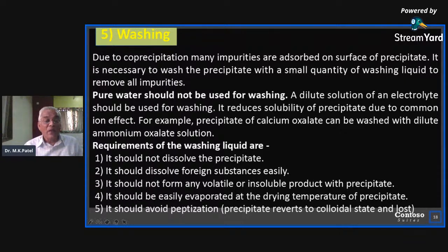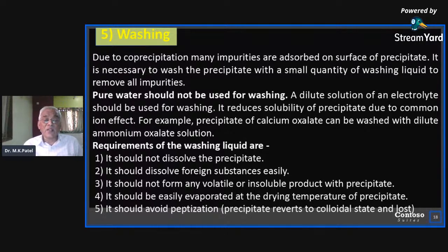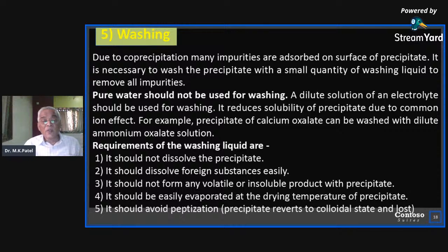The requirements of a washing liquid are: it should not dissolve the precipitate; it should dissolve the foreign substance easily; it should not form any volatile or insoluble product with the precipitate, which is very important because a volatile product cannot be isolated and accurate results cannot be given. It should be easily evaporated at the drying temperature of the precipitate so that the washing liquid is completely removed at the evaporation step.